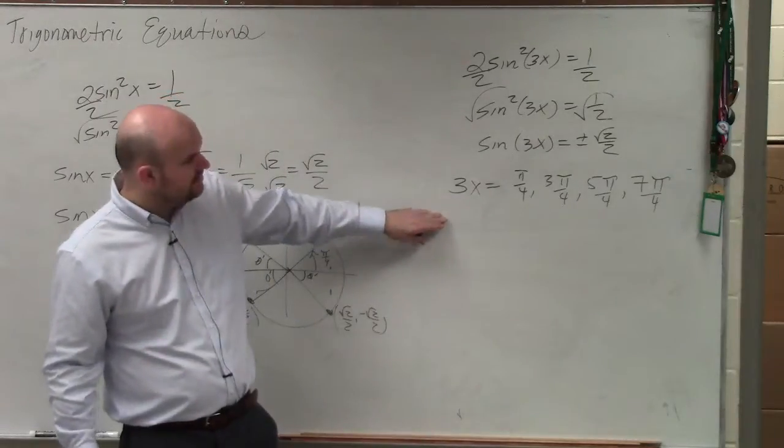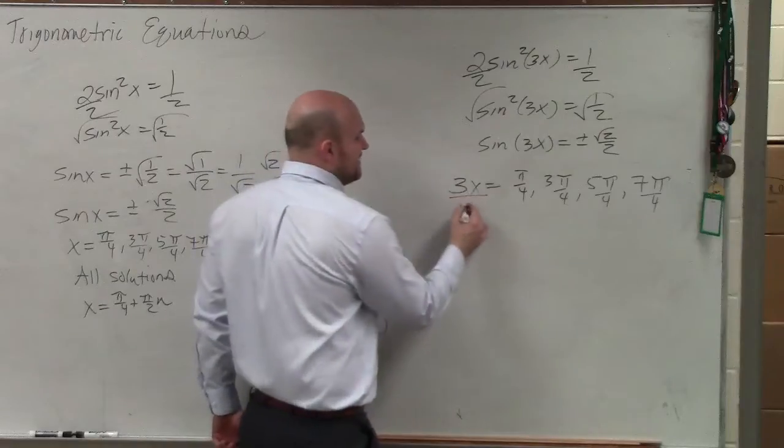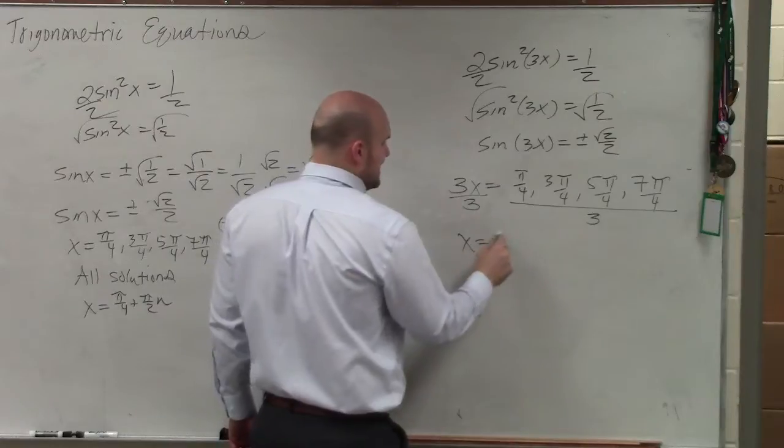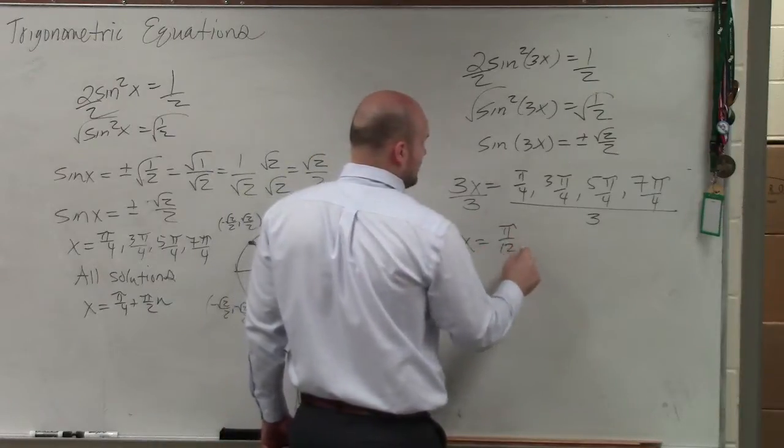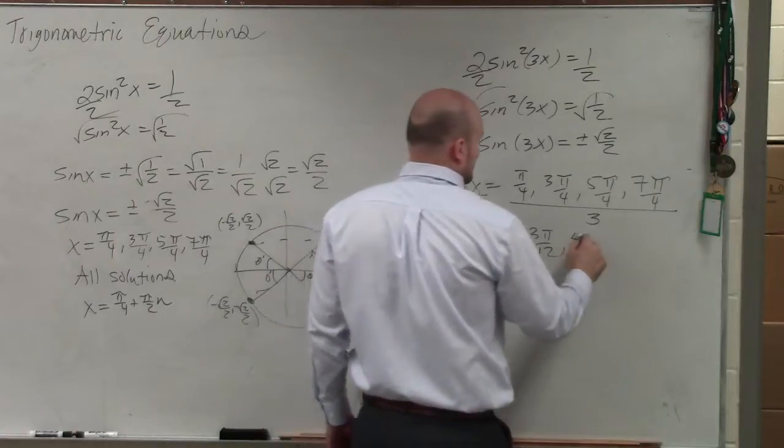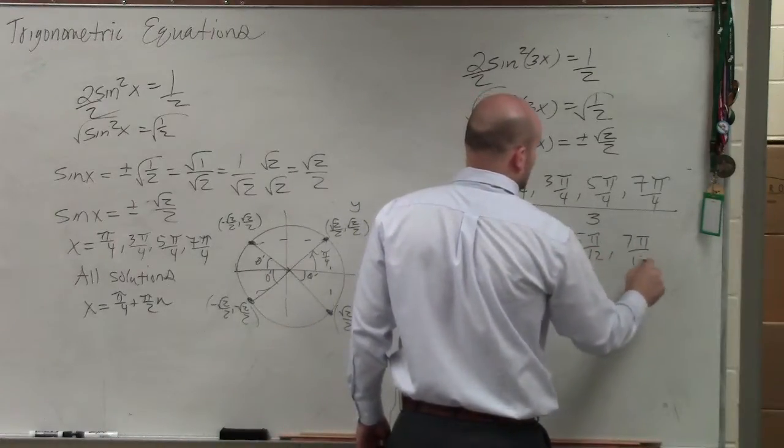But now, because you're not solving for x, you're solving for 3x, now we basically divide them by 3. You divide all of these by 3. x equals now pi over 12, 3 pi over 12, 5 pi over 12, 7 pi over 12.